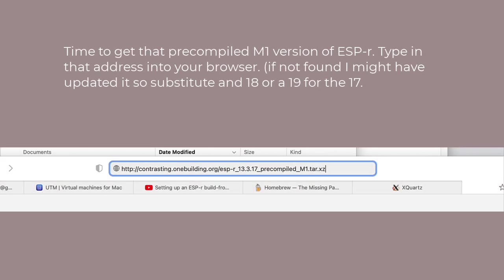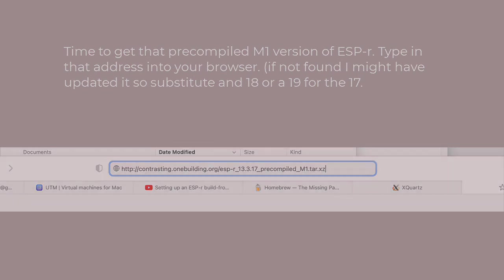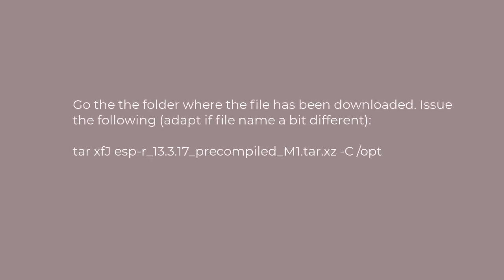Now comes the fun part — let's go and get that pre-compiled M1 version of ESPR. In your favorite web browser, type in the provided address and it should download. If the file name has been updated, you might change the 17 in that address to 18 or 19. Once the file has been downloaded, go look in your usual downloads location and then issue the following command. Adapt the filename if what you downloaded has a slightly different name. Basically, this extracts a tar.xz file and puts the results of the extraction into the /opt folder.